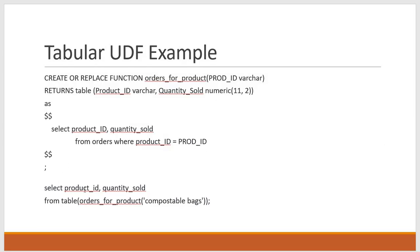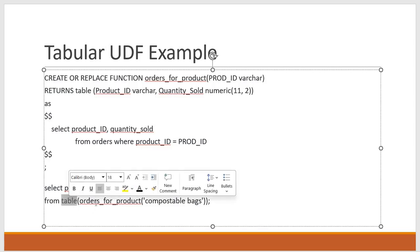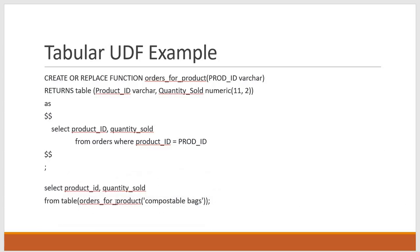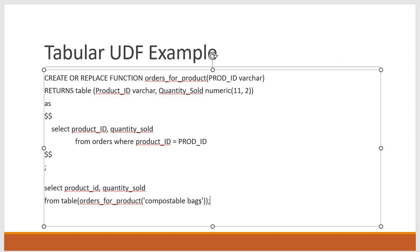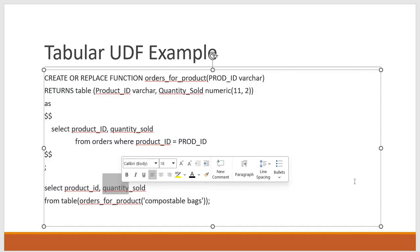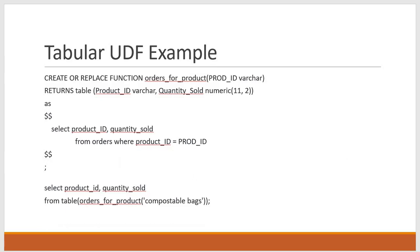To execute a tabular UDF, we use a TABLE literal in the SELECT statement: SELECT product_id, quantity_sold FROM TABLE(orders_for_product('compostable_bags')). Since the function returns a table, we use the TABLE() keyword to retrieve the result. The two fields returned match what is defined in the function definition. This is how tabular UDFs work, and now let's see this with examples.